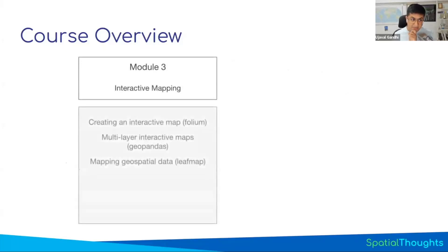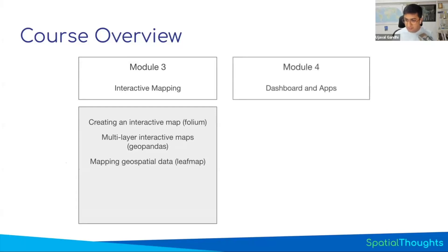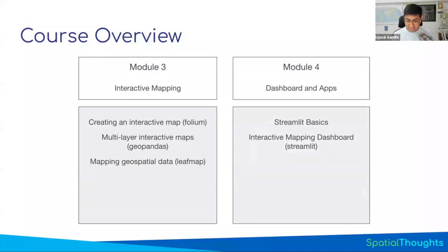In module two, we'll start with interactive mapping — learning about Folium maps, and since GeoPandas has integration with Folium you can just call .explore on a dataframe to create a nice interactive map. Then we'll focus on leafmap and integrate that into a dashboard and apps framework called Streamlit. Streamlit is a really easy way to create apps — people can build a nice looking app in just a few hours and publish it. It's great for prototyping and for data scientists who want to let people explore a model interactively. Streamlit also gives you free hosting with a URL you can share publicly or privately.